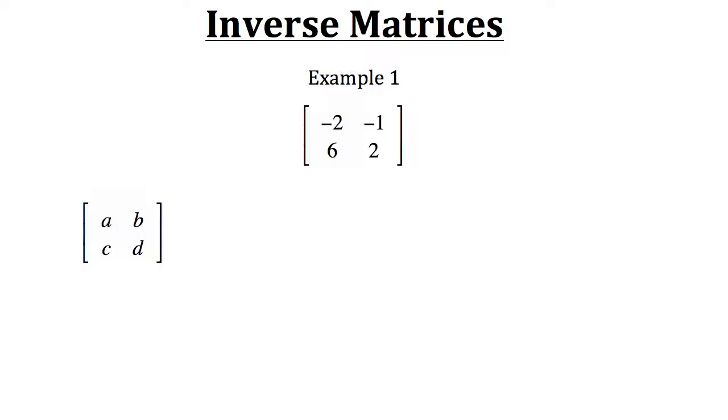Now if we wanted to find the inverse of that particular matrix, we would need to do this operation here. So the 1 over ad minus cb is telling us 1 over the determinant of the given matrix. We want to take that value and multiply it by this second matrix. It's just a manipulation of our original matrix. Our a and d elements are going to switch places, and then our b and c elements are just going to take opposite signs from what they currently have.